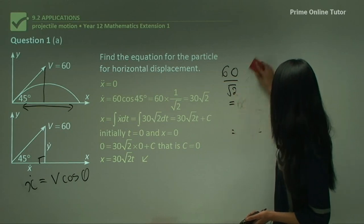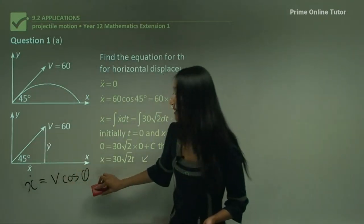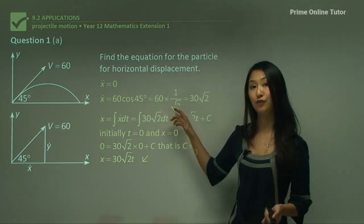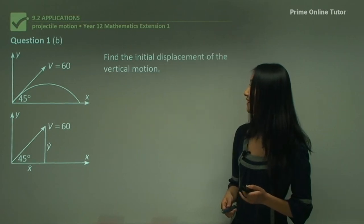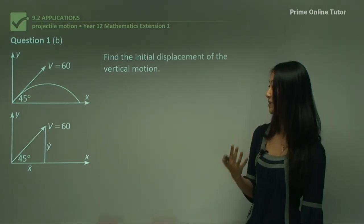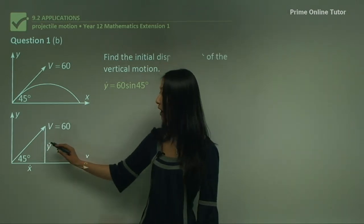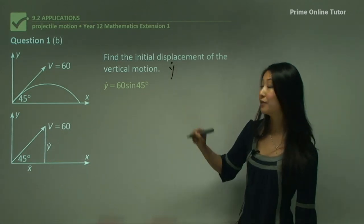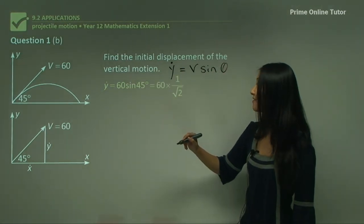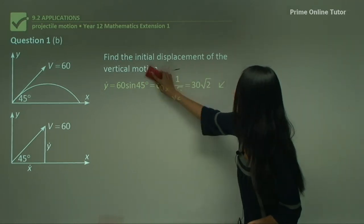That was a revision: always start with acceleration, then use the right-angled triangle to get the initial velocity v·cosθ. Because the horizontal velocity is steady, we can use the initial velocity throughout. Moving on to part b, we want to find the initial vertical velocity. From the right-angled triangle, the vertical velocity equals v·sinθ — opposite over hypotenuse. Substituting in: 60·sin45° = 60·(1/√2) = 30√2. So the initial vertical velocity is 30√2.